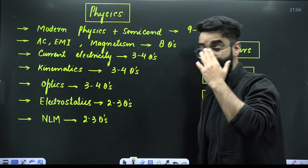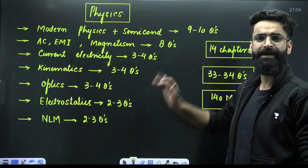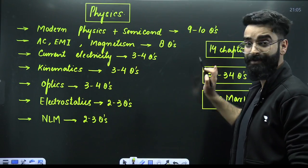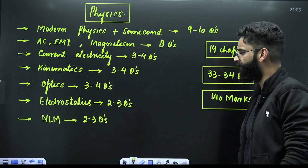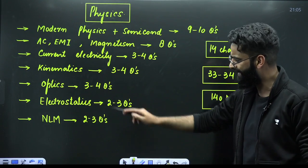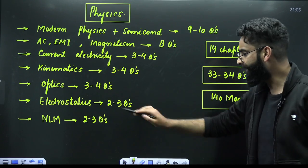Moving ahead, the subject physics. Modern physics semiconductors, surely you'll get 9 to 10 questions. AC, EMI, magnetism, 8 questions. Current electricity, 3 to 4 questions. Kinematics, 3 to 4 questions. Optics, 3 to 4 questions. Electrostatics, 2 to 3 questions. NLM, Newton's laws of motion, 2 to 3 questions.